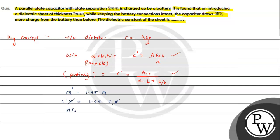Substituting the capacitance expressions: A·ε₀ / (d − t + t/k) = 1.25 × A·ε₀ / d. The A·ε₀ terms cancel, leaving 1 / (d − t + t/k) = 1.25 / d. We now substitute the numerical values to solve for k.